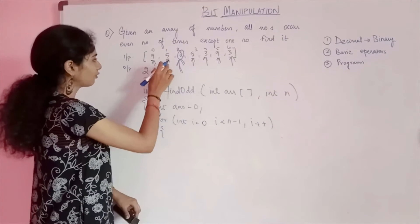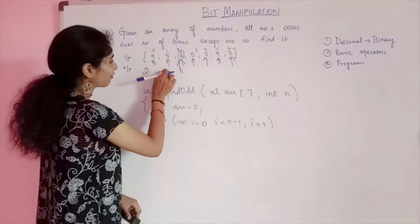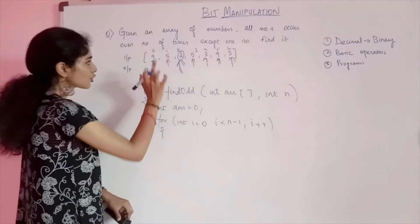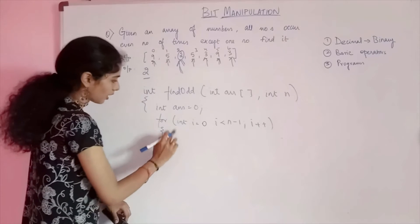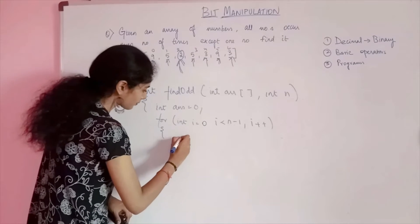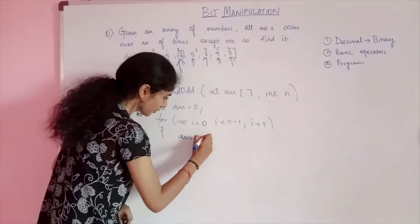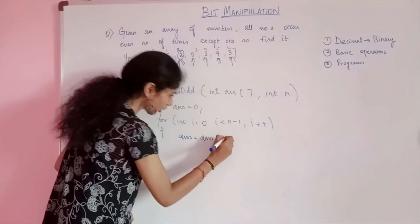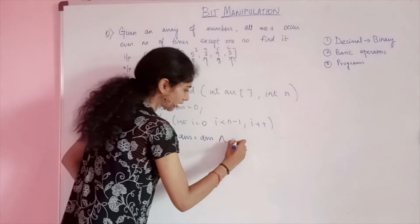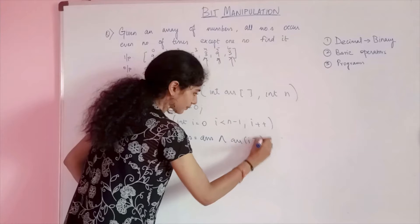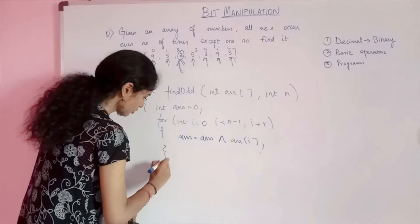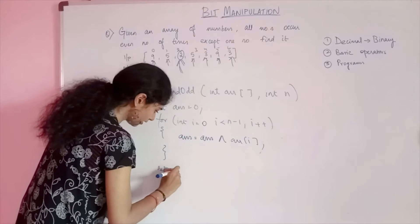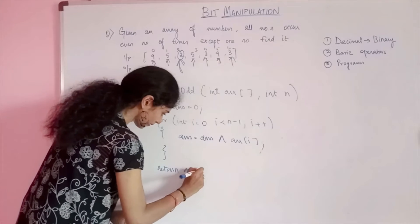We have to do the XOR operation for every element in the array. Then at the end, we will be left with the element that has occurred odd number of times. Answer equals answer XOR array[i]. At the end, we will have to return the answer that we got.